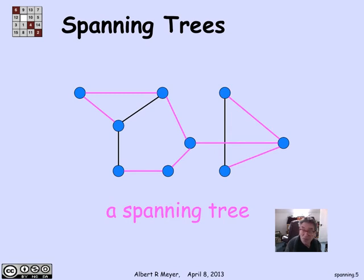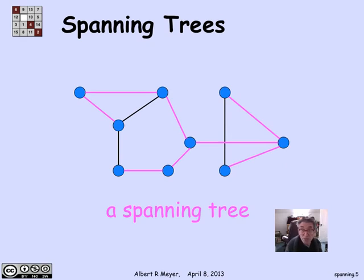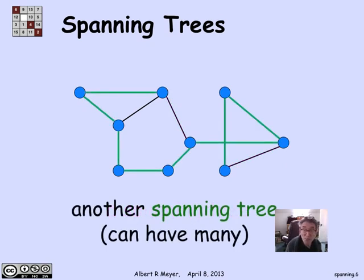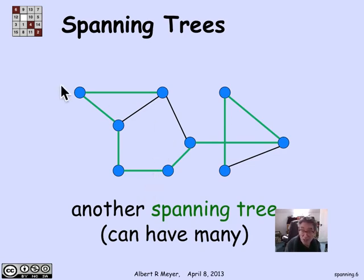There it is. If you check these magenta edges that I've highlighted, they define a tree. I haven't used three of the edges in the original graph. This particular choice of spanning tree is arbitrary. In general, there are lots of spanning trees. Here's another one, this time with green edges — I'm using only edges from the original graph, leaving out three different ones. It's got no cycles and it spans the graph because every vertex is part of it, and it's connected since it's a tree.